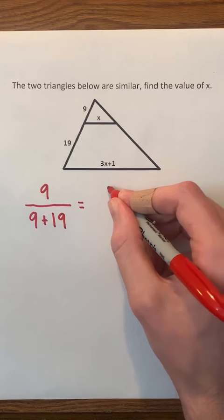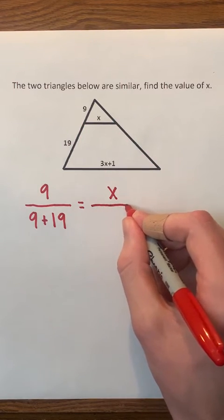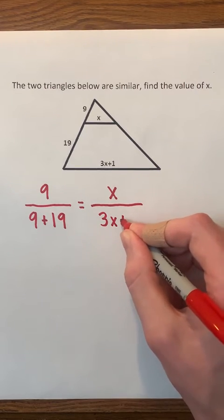Next, we're going to set the fraction equal to x, which is the length of this other side of the smaller triangle. Then we're going to put x over 3x plus 1, which is the length of this other side of the larger triangle.